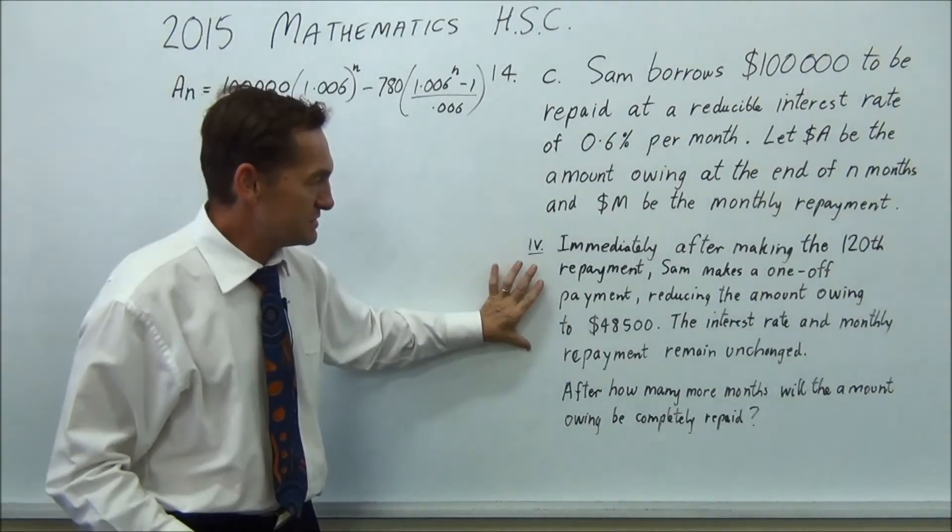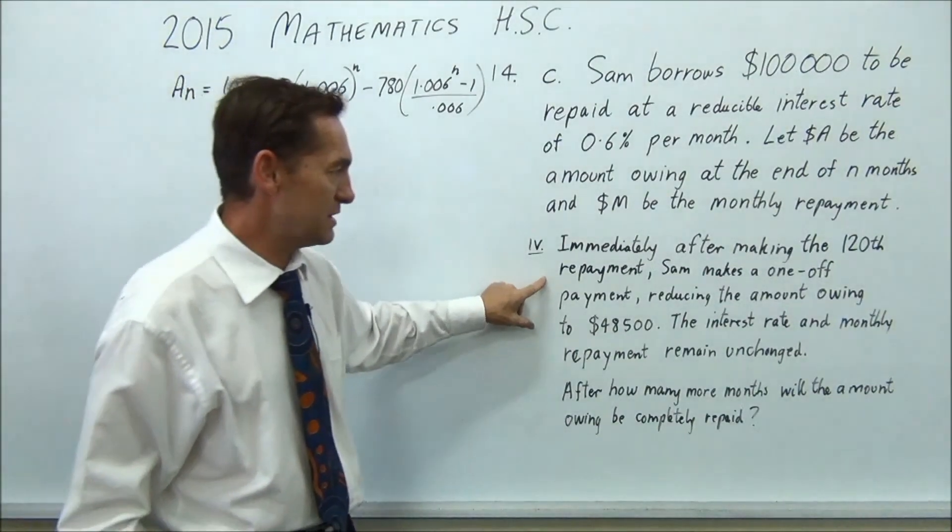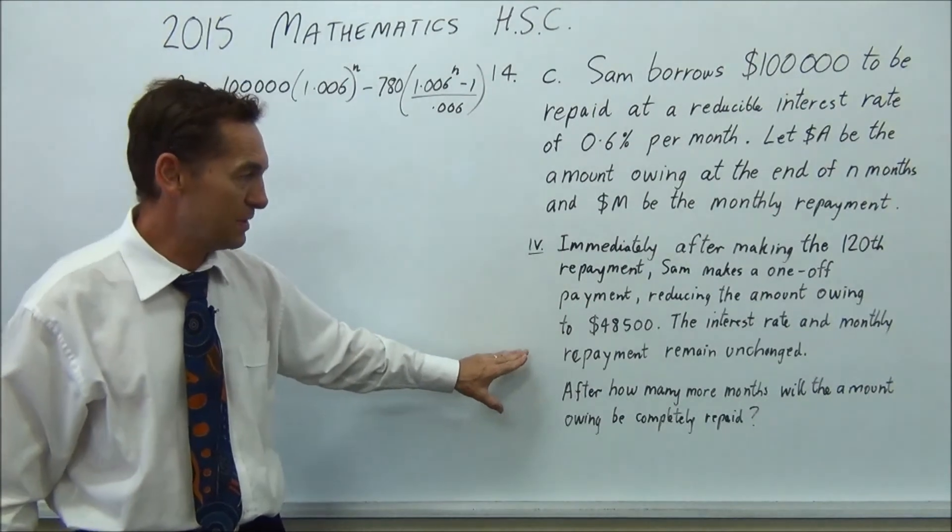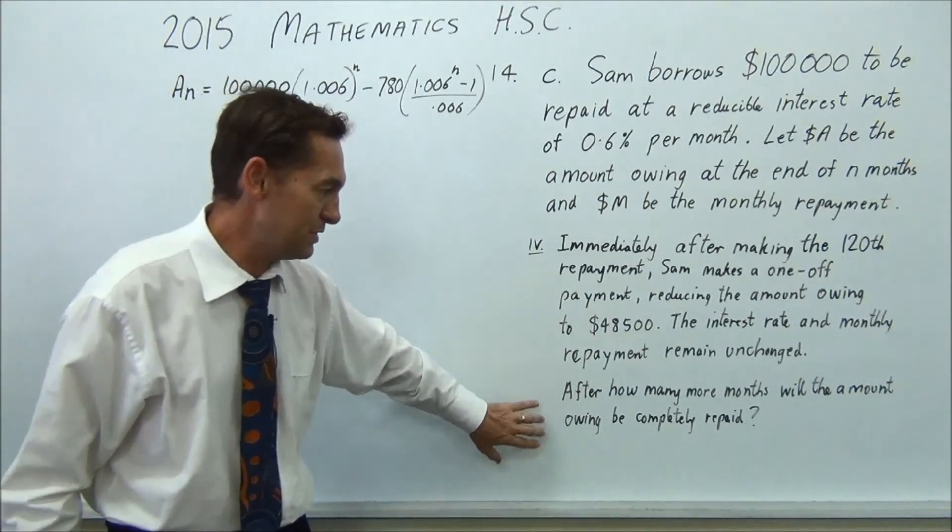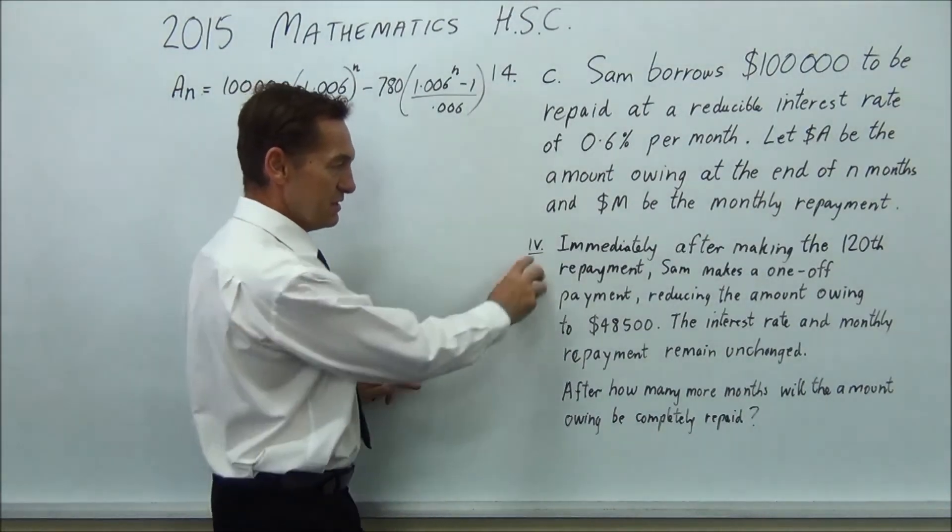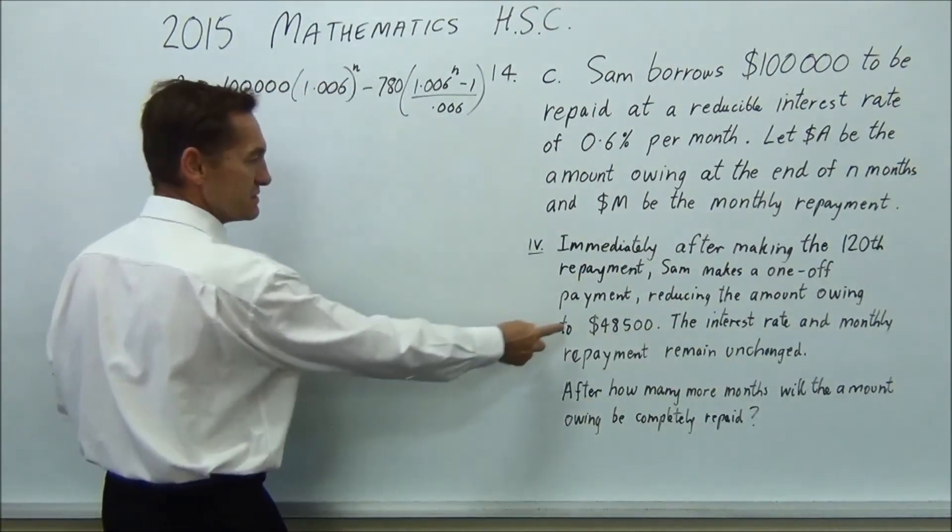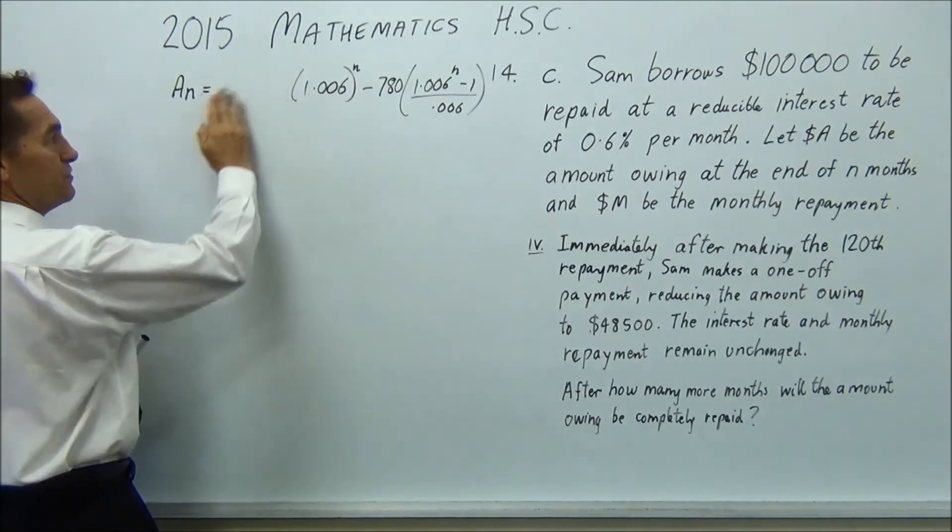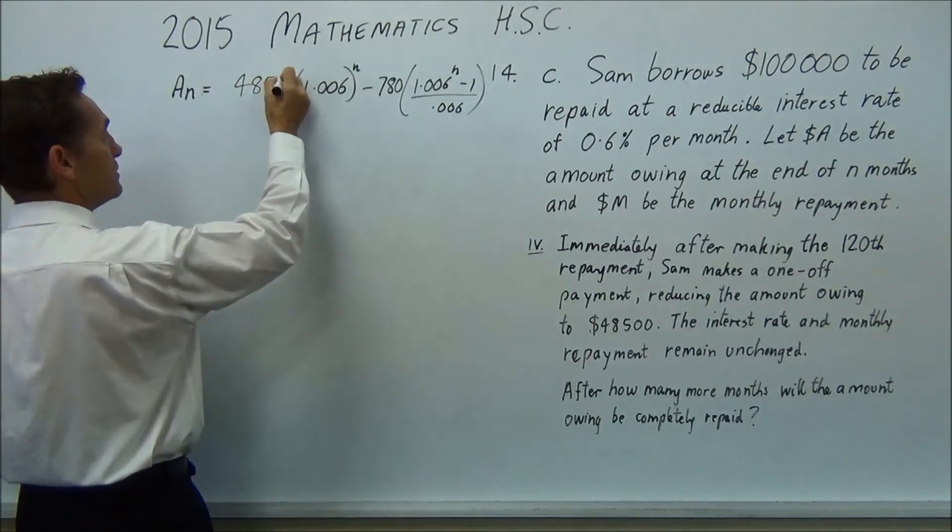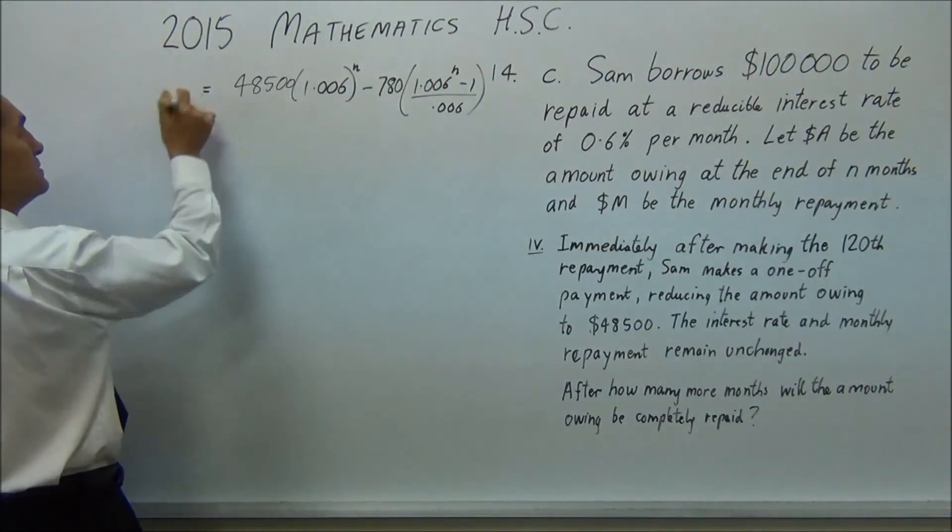G'day again. Part four. So this part is probably the most difficult part of the question. There's a lot of words in it. Immediately after making the 120th repayment, Sam makes a one-off payment reducing the amount owing to $48,500. The interest rate and monthly repayment remained unchanged. After how many more months will the amount be completely repaid? You could just about wipe all of that question off and make a really simple sentence. Start again with $48,500. And that's all they'd need to say instead of all of this stuff. Okay, so start again with $48,500. So all you need to do,